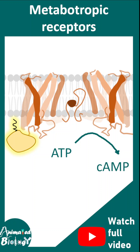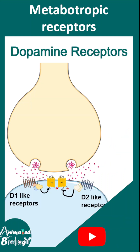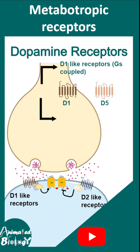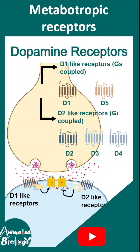One example of a metabotropic receptor is the dopamine receptors. The D1 dopamine receptors are Gs-coupled and activate adenylate cyclase, while the D2 dopamine receptors are Gi-coupled and inhibit adenylate cyclase.